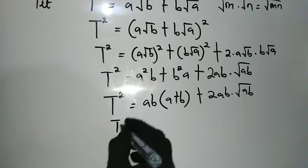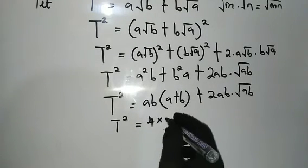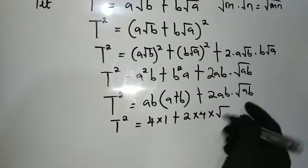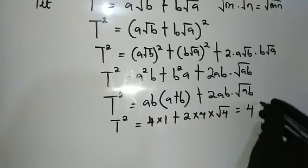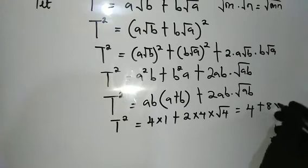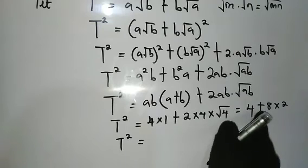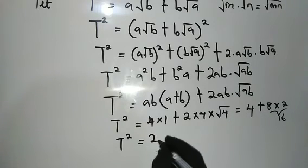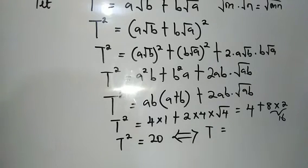From here we make the necessary substitutions. t squared equals ab — which according to the problem is 4 — times (a plus b), which is 1, plus 2 times ab, meaning 2 times 4, times the square root of ab, which is the square root of 4. Simplifying: 4 times 1 is 4, plus 2 times 4 is 8, times the square root of 4 which is 2, giving us 8 times 2 equals 16. So t squared equals 4 plus 16, which equals 20.